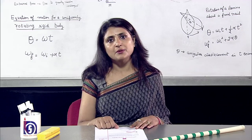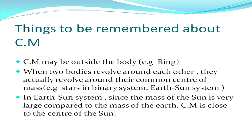Things to remember about CM: first, CM may be outside the body, as in the case of a ring. Also, when two bodies revolve around each other, they actually revolve around their common center of mass. Examples are stars in a binary system and the earth-sun system. In the earth-sun system, the mass of the sun is very large compared to the mass of the earth, therefore the CM is close to the center of the sun.